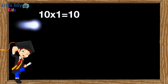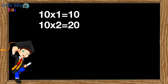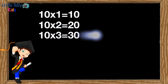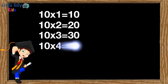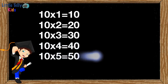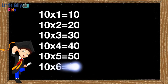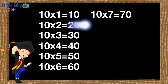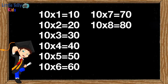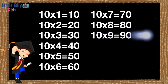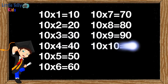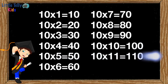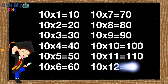10 ones are 10, 10 twos are 20, 10 threes are 30, 10 fours are 40, 10 fives are 50, 10 sixes are 60, 10 sevens are 70, 10 eights are 80, 10 nines are 90, 10 tens are 100, 10 elevens are 110, 10 twelves are 120.